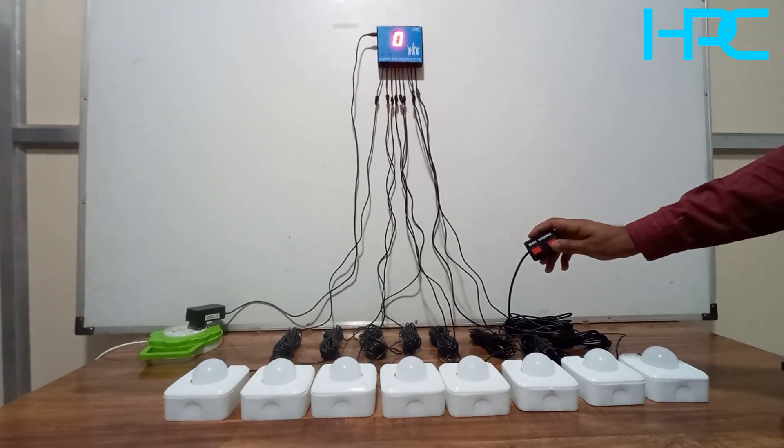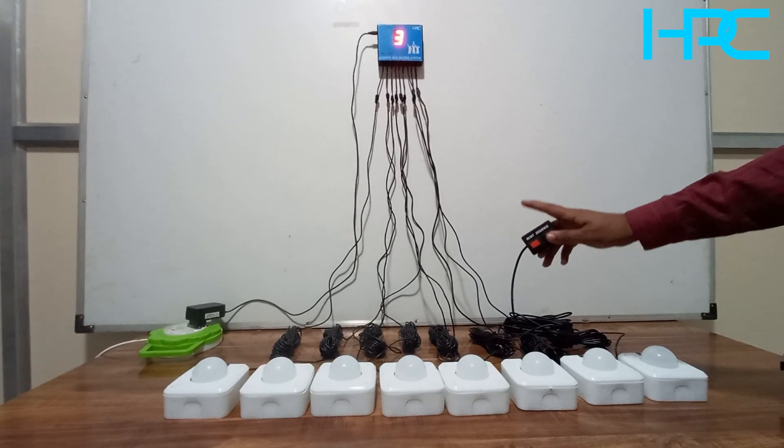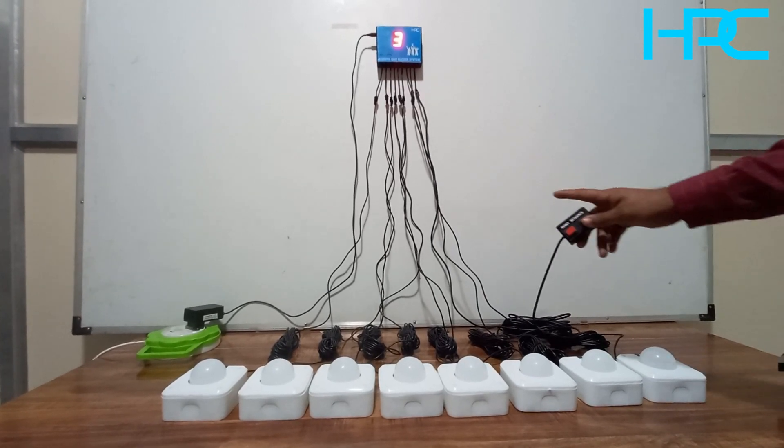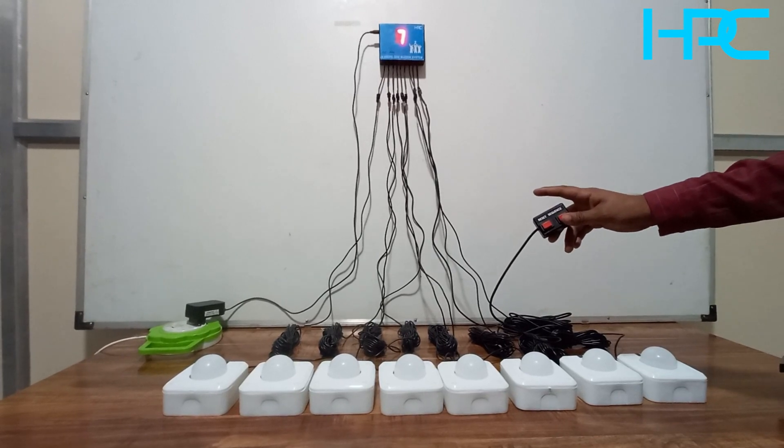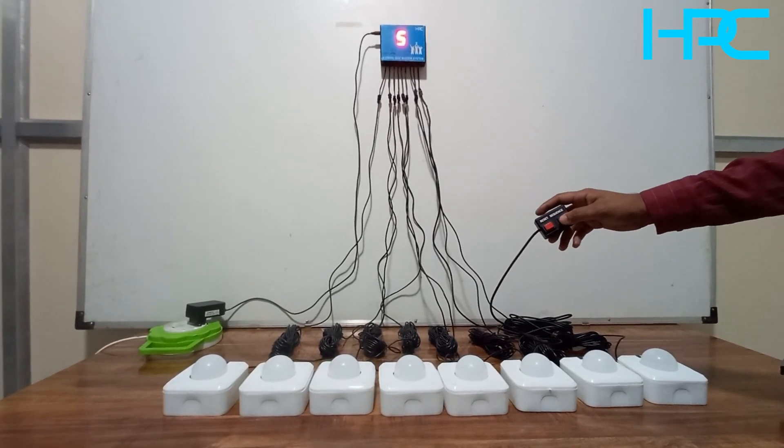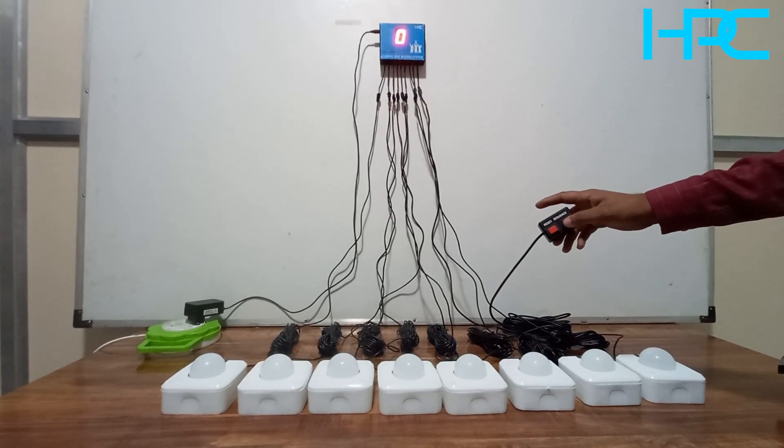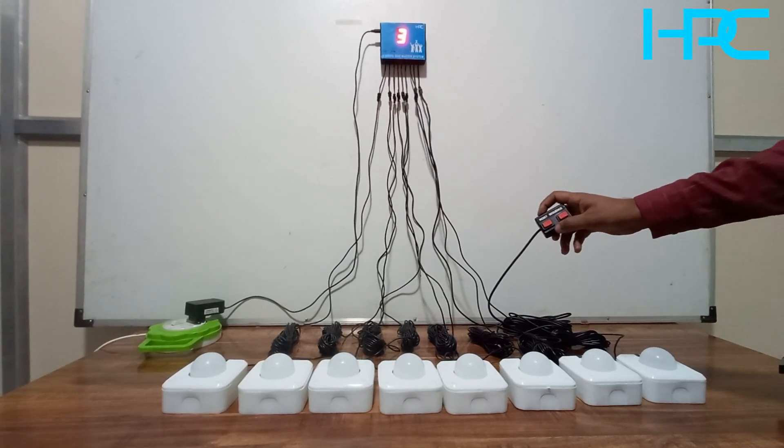First you will see 0. Then again press sequence. Button number 3 has pressed the button first, then 7 has pressed second, then third. Then if you press, it will show 0, 3, 7, 5. It will be continued.